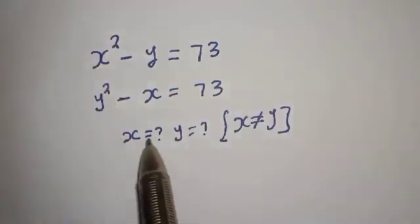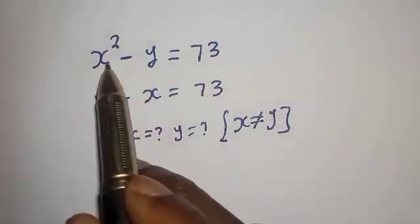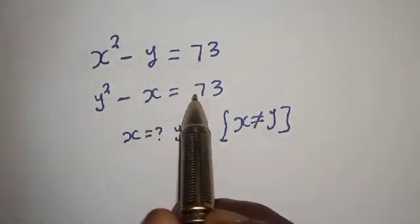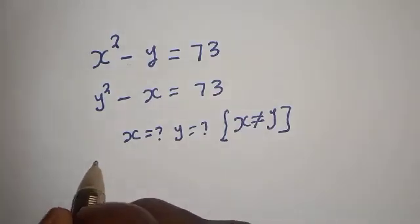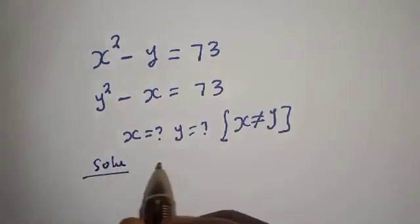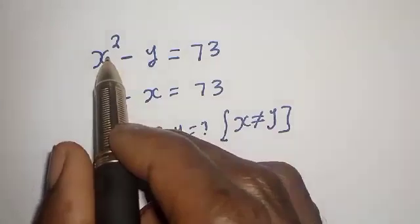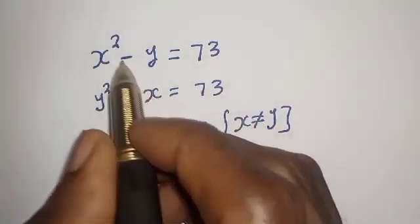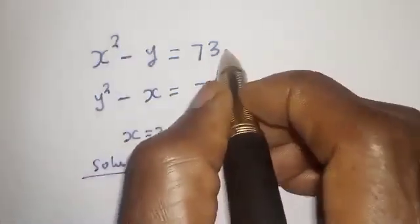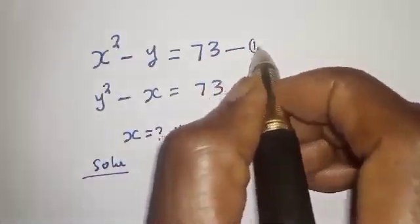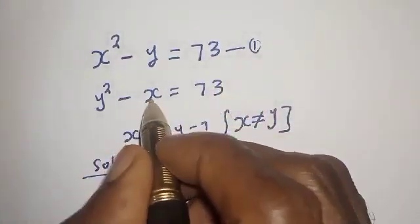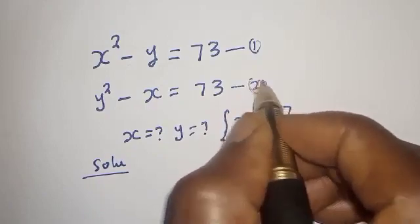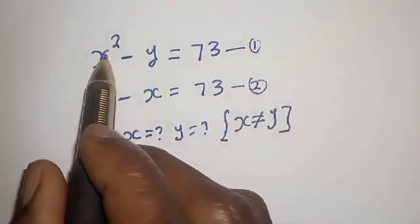Hello. How to solve for x and y from these given equations: x squared minus y is equal to 73, and y squared minus x is equal to 73. Solution: we can see that there are two equations here, so x is not equal to y. Let's call x squared minus y equals 73 equation 1, and y squared minus x equals 73 equation 2.